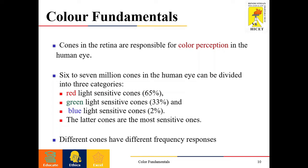In our eye, we have two different sensors: cones and rods. Cones are responsible for color perception and photopic vision, also called bright light vision. Six to seven million cones are present in the human eye, and these can be divided into three major categories. Sixty-five percent of cones are responsible for red light sensitivity, 33 percent are green light sensitive, and only two percent are blue light sensitive. These two percent of blue light sensitive cones are highly sensitive.